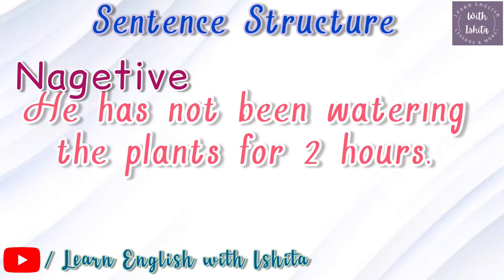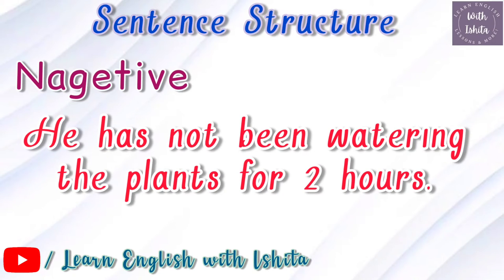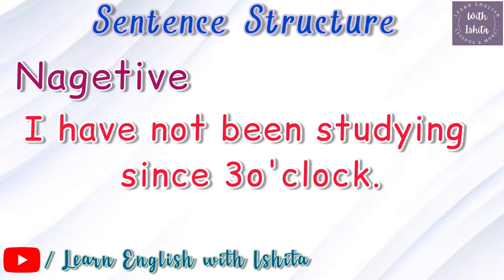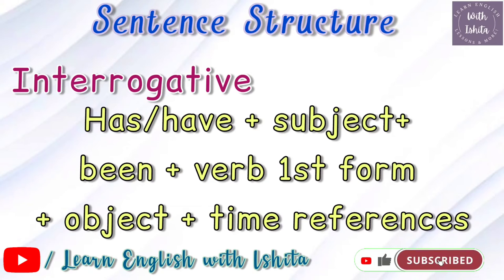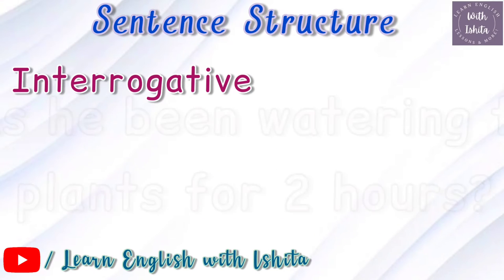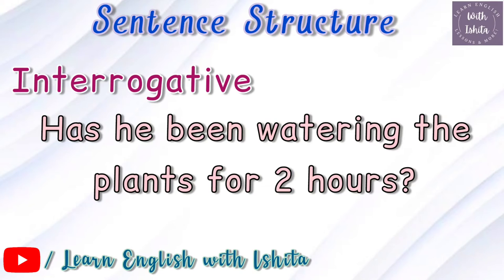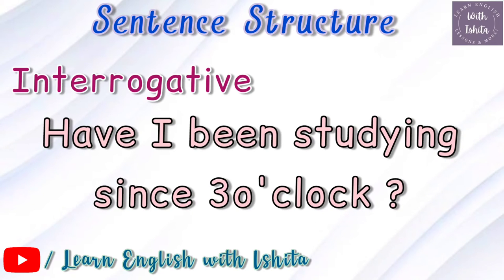Negative example: 'He has not been watering the plants for two hours.' 'I have not been studying since three o'clock.' For interrogative sentences, the structure starts with the auxiliary: 'has' or 'have' + subject + 'been' + base verb + '-ing' + object + time reference. Example: 'Has he been watering the plants for two hours?' 'Have I been studying since three o'clock?'